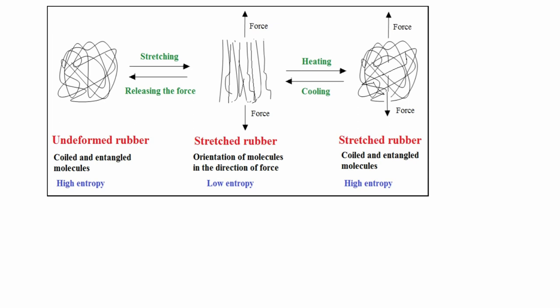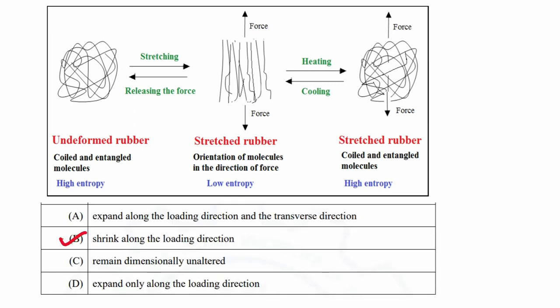When stretched rubber is heated again, the chains start to melt and polymer regains coiled structure again. So when force is applied on elastomeric rod and heated above Tg, the rod starts to crystallize. And due to crystallization, the rod will start to shrink on further heating. So option B is correct. The rod will shrink along the loading direction.